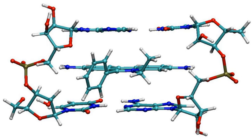This unwinding causes the base pairs to separate, or rise, creating an opening of about 0.34 nanometers. This unwinding induces local structural changes to the DNA strand, such as lengthening of the DNA strand or twisting of the base pairs.